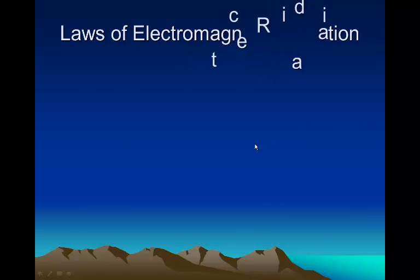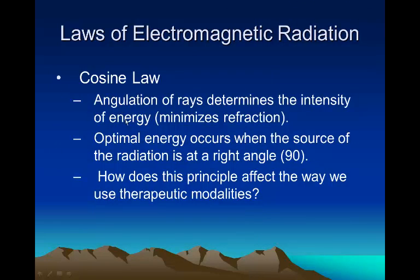Other laws of electromagnetic radiation include the cosine law. The cosine law says that the angulation of rays determines the intensity of the energy, or minimizes the refraction. Optimal energy occurs when the source of the radiation is at a right angle. The straighter you have something, or closest to a right angle, the greater the absorption and the less refraction will occur. So when you're doing ultrasound, you've got to make sure that ultrasound head is flat against the body's tissue, as close to a right angle as you can.